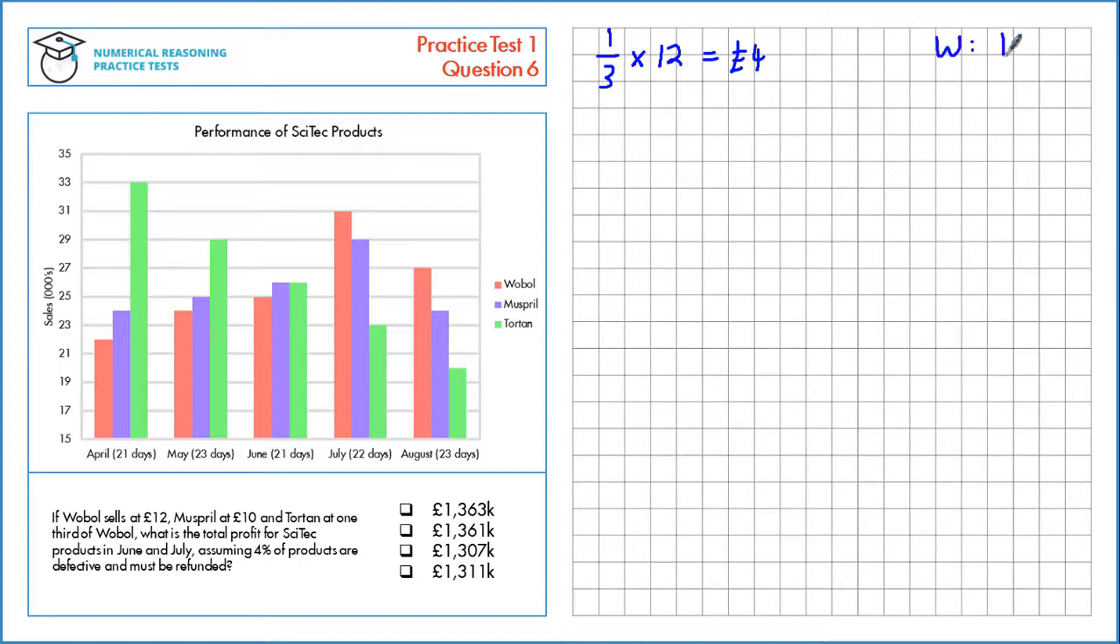So we have our selling prices of Wobol at £12, Muspril is £10, and Torton at £4.